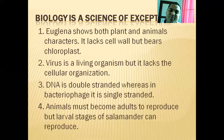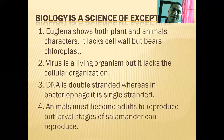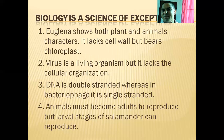Normally, animals must become adult to reproduce — we know that. But the larval stage of the salamander can reproduce; salamanders can give birth to offspring at the larval stage. So this is another exception in biology.